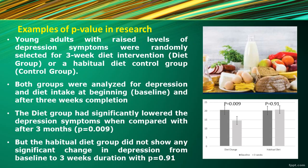An example: a study was conducted on young adults with raised levels of depression symptoms. They were recruited for a three-week diet intervention — named the diet group — while the control group followed their habitual diet for three weeks. Both groups were monitored at baseline and after three weeks. The researcher found a p-value of 0.09, showing significantly lowered depression in the diet group compared to the control group. The habitual diet group showed no significant difference over time, with a p-value of 0.91.